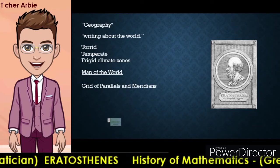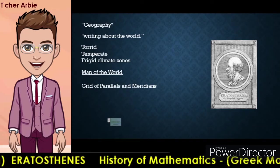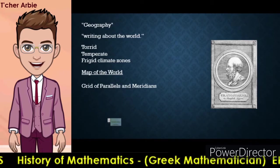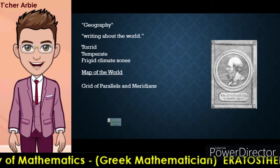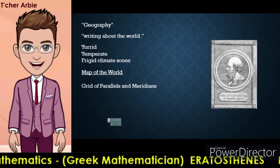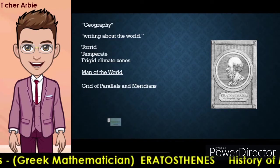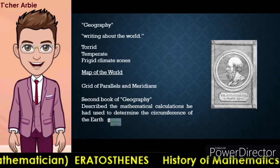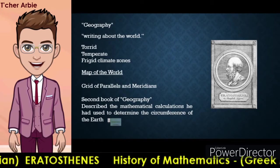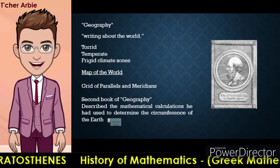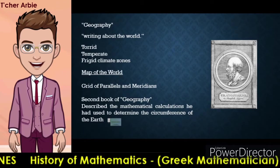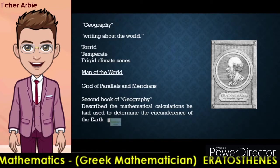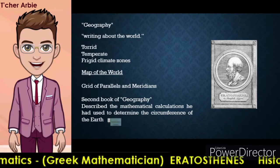The first book of geography contained a summary of existing geographical work and Eratosthenes' speculations about the nature of the planet earth. He believed it was a fixed globe whose changes only took place on the surface. The second book described the mathematical calculations he had used to determine the circumference of the earth. The third contained a map of the world in which the land was divided into different countries. It is one of the earliest examples of political geography.